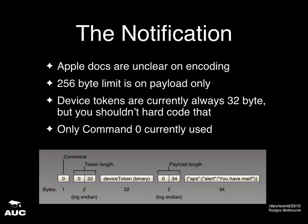The 256-byte limit applies to the payload specifically. The device tokens are currently 32 bytes, but they might change. There is only one command — command zero — which means send a push notification. So the packet is fundamentally very simple: command zero, the device token to send it to, the length of data, and the payload data itself. This data is a combination of structured data for the push notification plus any random data you want, up to 256 bytes total.